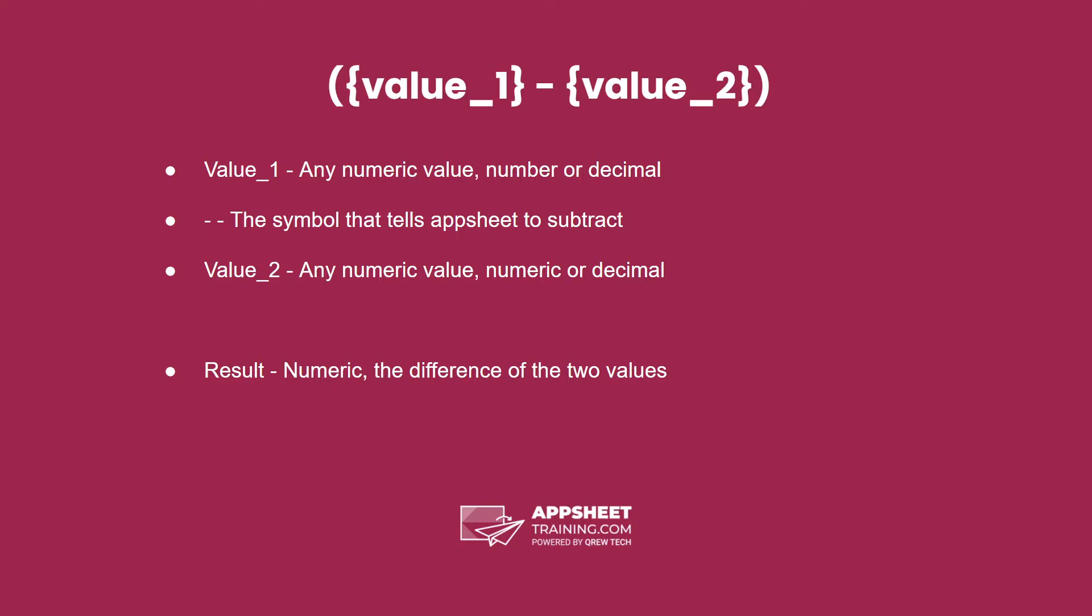And the result is the difference between these two values. The data type is numeric and depends on the data types of the first and second values. If you have a decimal in one of those, it's going to result in a decimal. If you don't, it's going to result in a number.